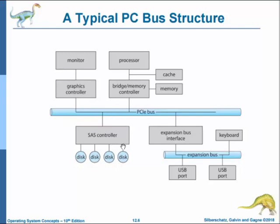The PCIe bus is a flexible bus that sends data over one or more lanes. A lane is composed of two signaling pairs — one pair for receiving data and the other for transmitting — with each lane composed of four wires. Each lane is a full-duplex byte stream capable of transporting data packets in an 8-bit byte format simultaneously in both directions. The PCIe connector commonly uses eight lanes, designated by the 'x' prefix, for example x8.